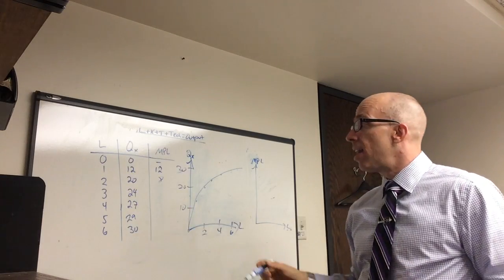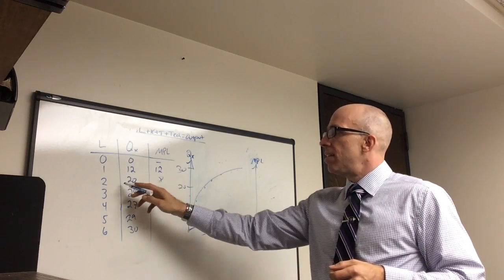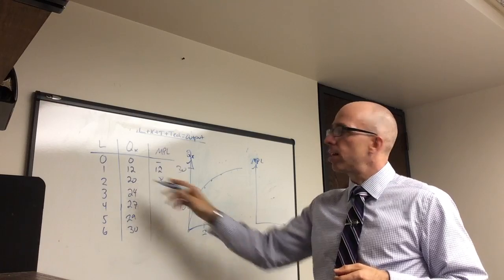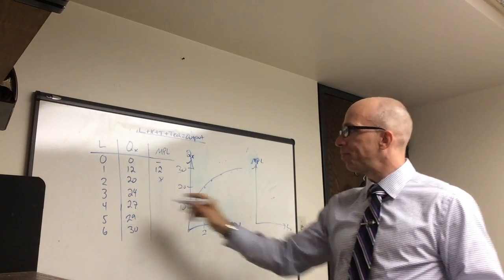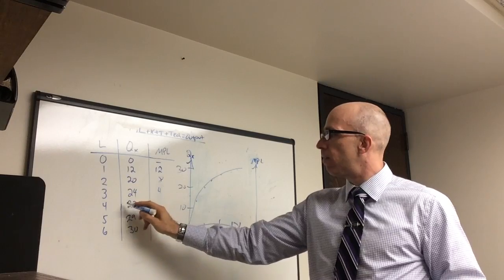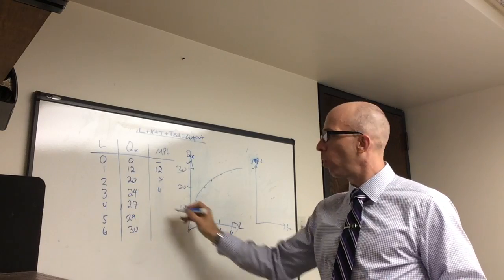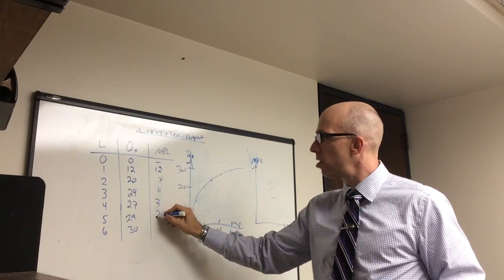20 over 2 is 10. That's average product, divided across both of them. But we're talking about the additional contribution. The third worker adds 4. The fourth is 27 minus 24, or 3. The fifth adds 2.